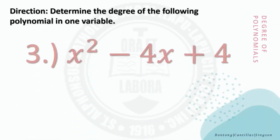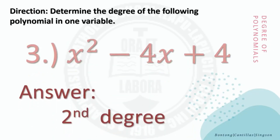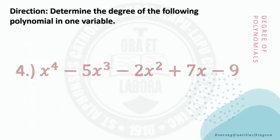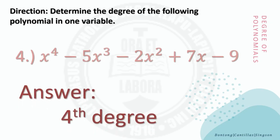Number 3: x squared minus 4x plus 4. The degree of this polynomial is second degree because 2 is the highest degree among the three terms. Number 4: x raised to 4 minus 5x cubed minus 2x squared plus 7x minus 9. The degree of this polynomial is fourth degree because 4 is the highest degree among the five terms in this polynomial.